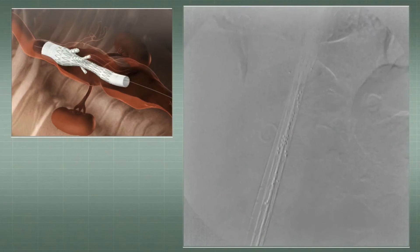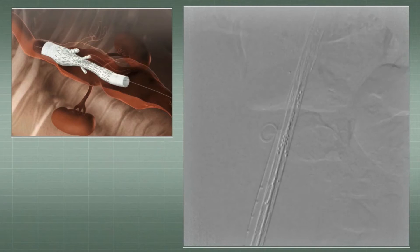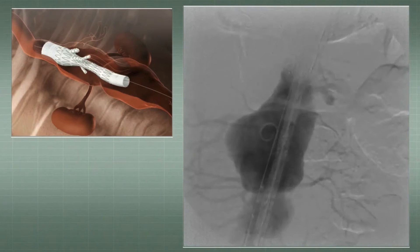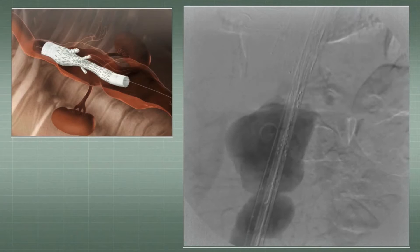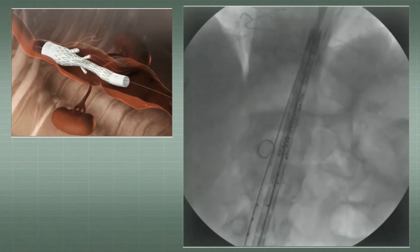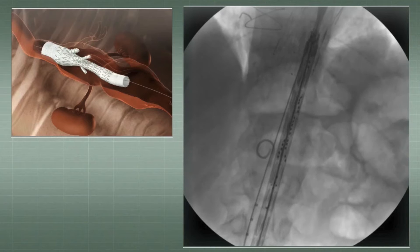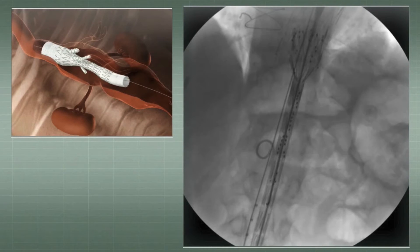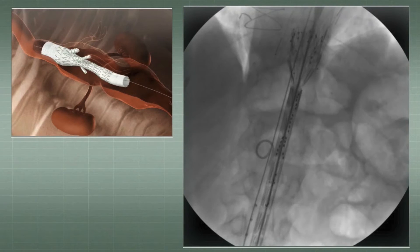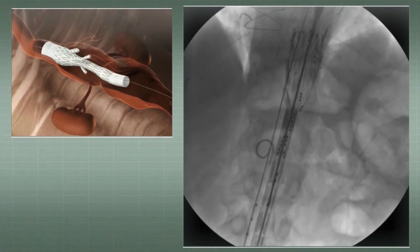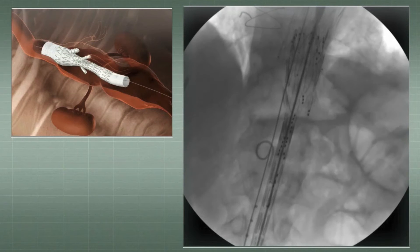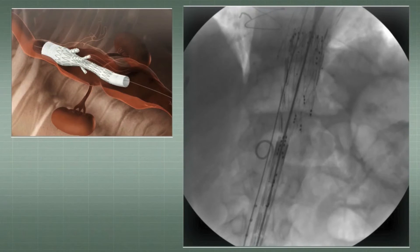While the branch stent graft is in place, an angiography is performed to confirm the position of the stent graft. Each of the visceral branches is marked with two golden marks at the base and three marks at the distal point.